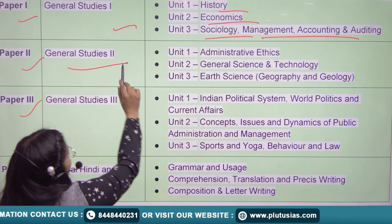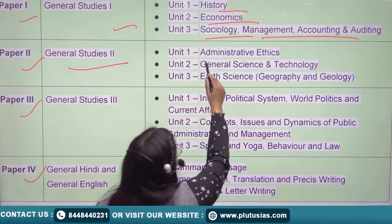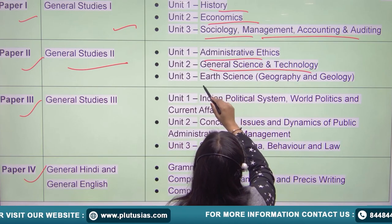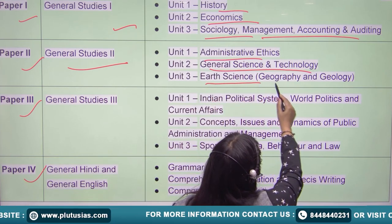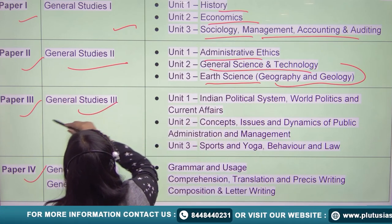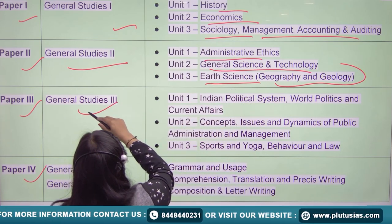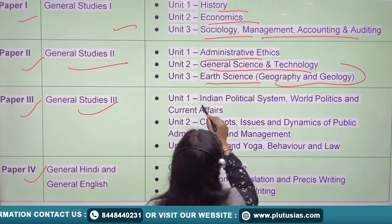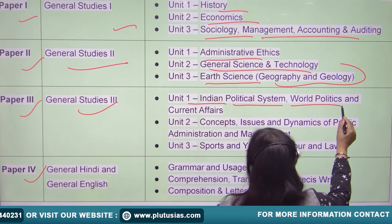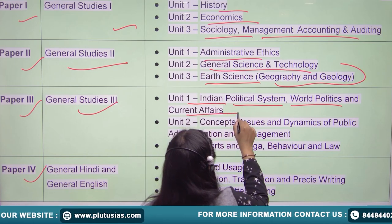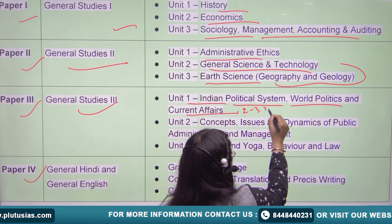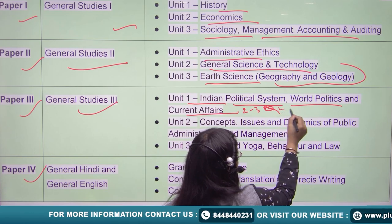General Study 2 ki baat karenge — administrative ethics, general science and technology se aapka question aayega, earth science, geography and geology se question banhenge. Paper 3 ki baat karte hain General Study 3 — Unit 1 mein aapka Indian political system aayega, world politics and current affairs se aapke question banhenge.